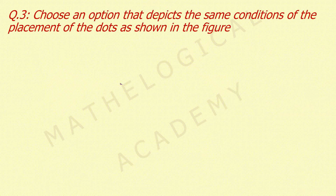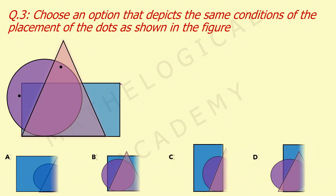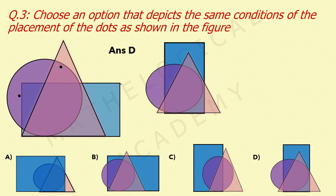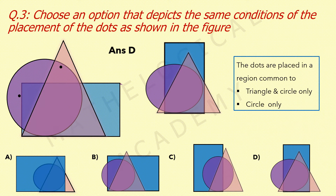Question 3: choose an option that depicts the same conditions of placement of dots as shown in the figure. The answer is option D. There are two dots: one lies in circle only, the other lies in circle and triangle only. In option A there is no region that is in circle only, so that cannot be our answer. In option B, only circle exists but circle and triangle only is not there because that region also lies in the rectangle.